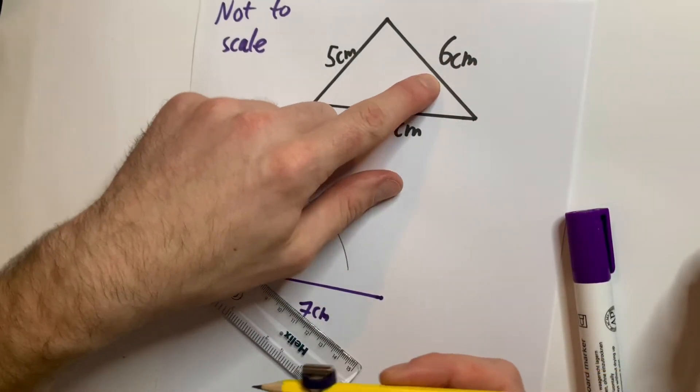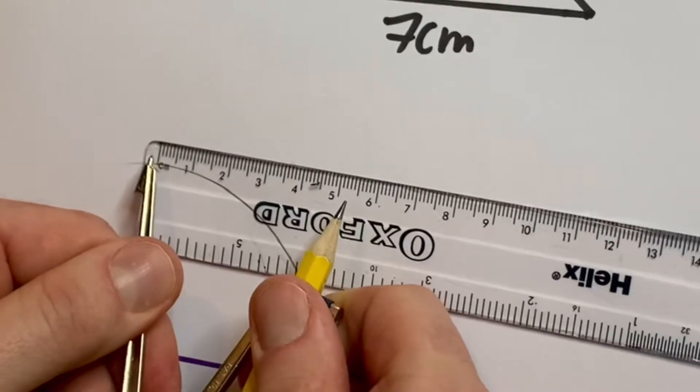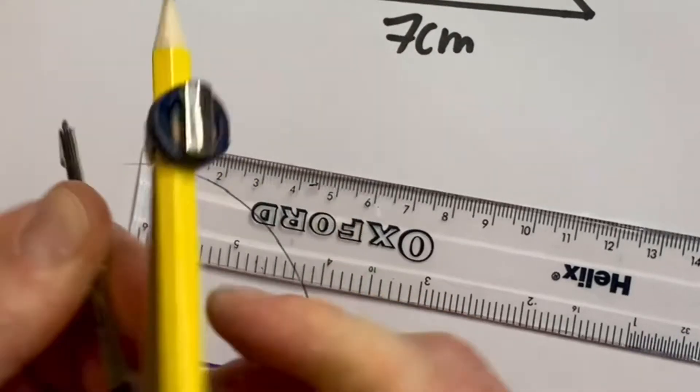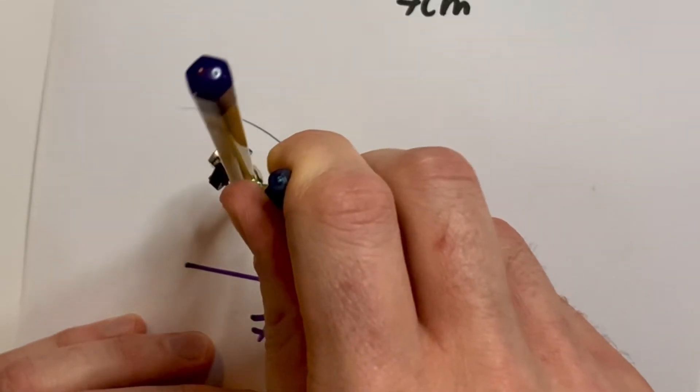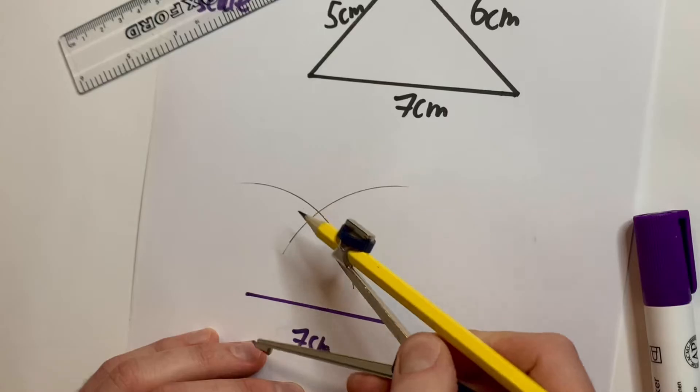So this one is six centimeters. Use our ruler again. We're going to measure six centimeters like so. Then we'll put the point on the far right this time, and I'm going to do another arc. You can see they intersect right here.